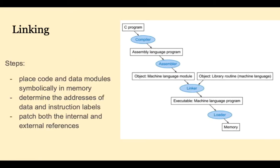The object files are linked by the linker, also called a link editor, into one executable file. To do this, it has to place code and data symbolically in memory, figure out addresses for data and instruction labels, and patch up all internal and external references.